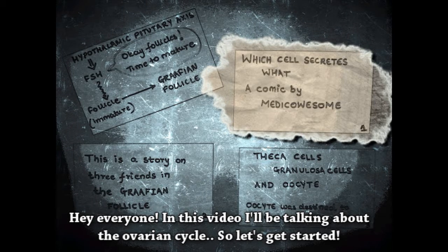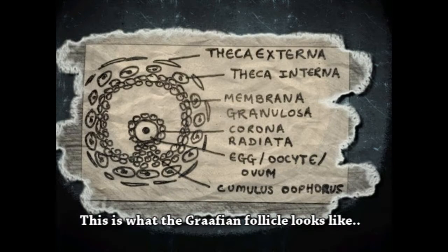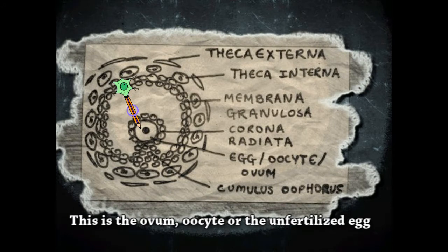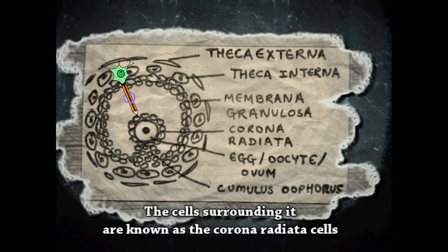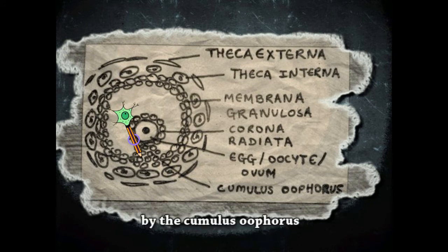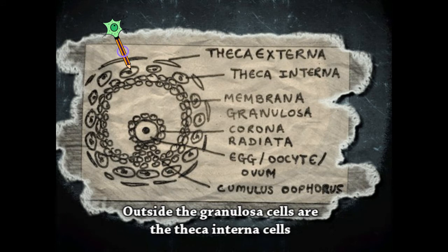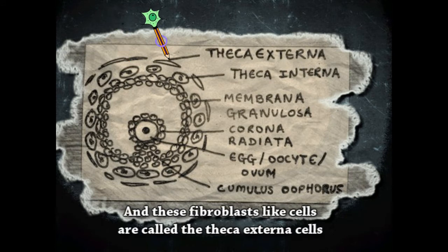In this video we'll be talking about the ovarian cycle. The cycle starts when FSH is secreted by the pituitary, which helps the follicle mature into the Graafian follicle. The Graafian follicle contains the ovum, oocyte, or unfertilized egg. The cells surrounding it are known as the corona radiata cells, and the oocyte is suspended in a cavity called the antrum by the cumulus oophorus. All of these cells are called the granulosa cells. Outside the granulosa cells are the theca interna cells.